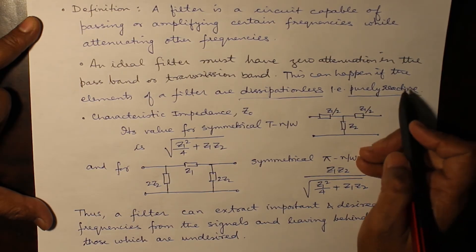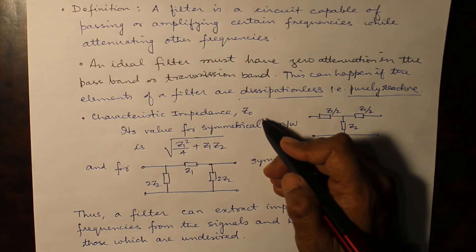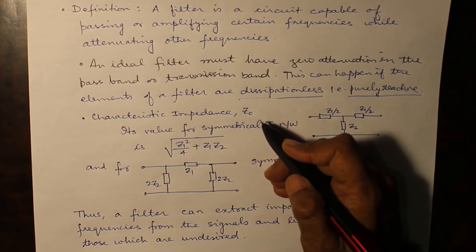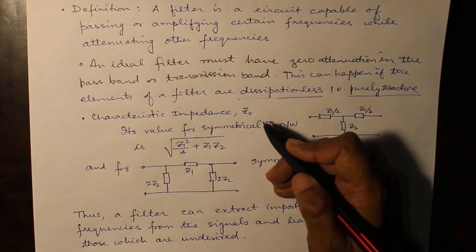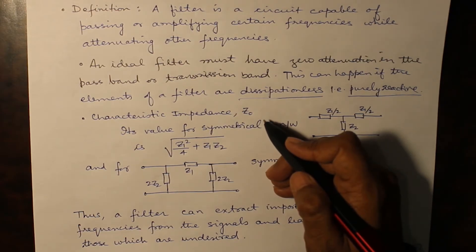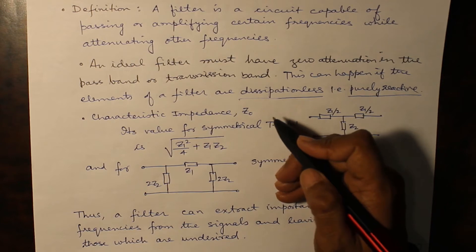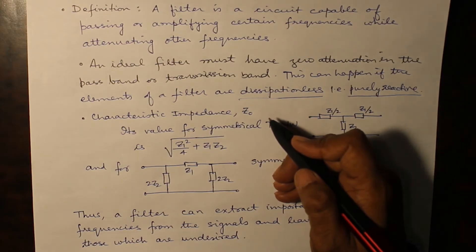Now coming on to some of the terms which are associated with a filter, one is characteristic impedance. Characteristic impedance is generally for a transmission line and it is basically the ratio of the impedance r plus j omega l to the conductance g plus j omega c, and if you take the under root of it then that gives you the characteristic impedance.